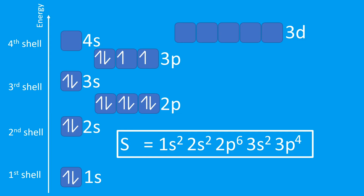Now let's look at something in Group 6: sulfur. Sulfur is going to accept two electrons, filling those 3p subshell orbitals to become 3p⁶, and the charge will be 2−. So the anion of sulfur — which will be called sulfide — has the electron configuration ending in 3p⁶.